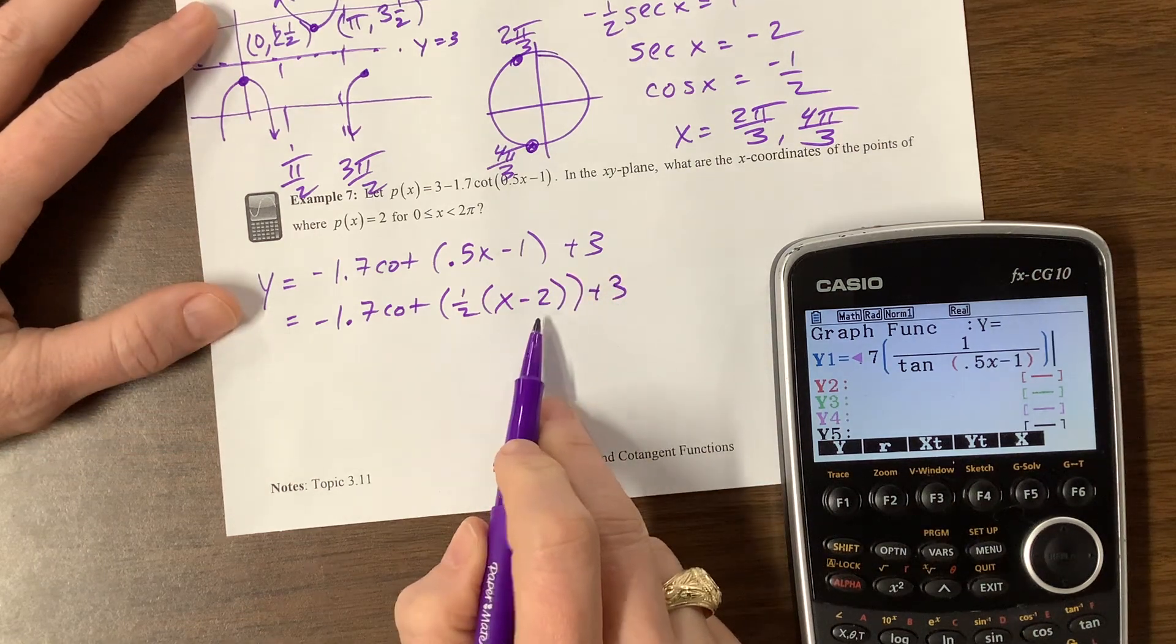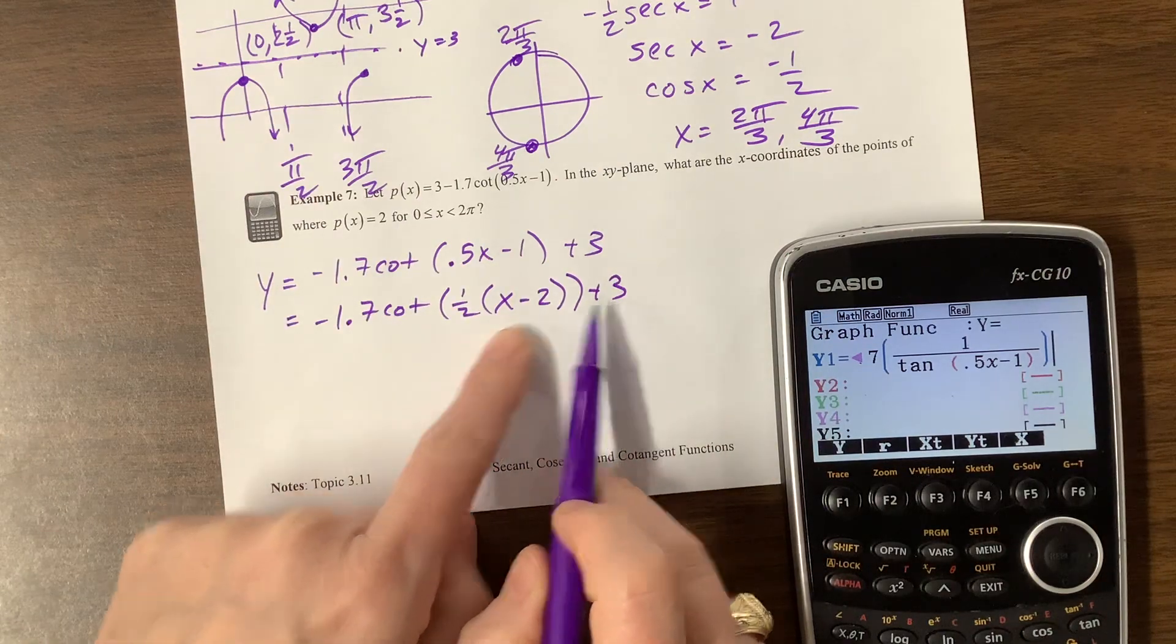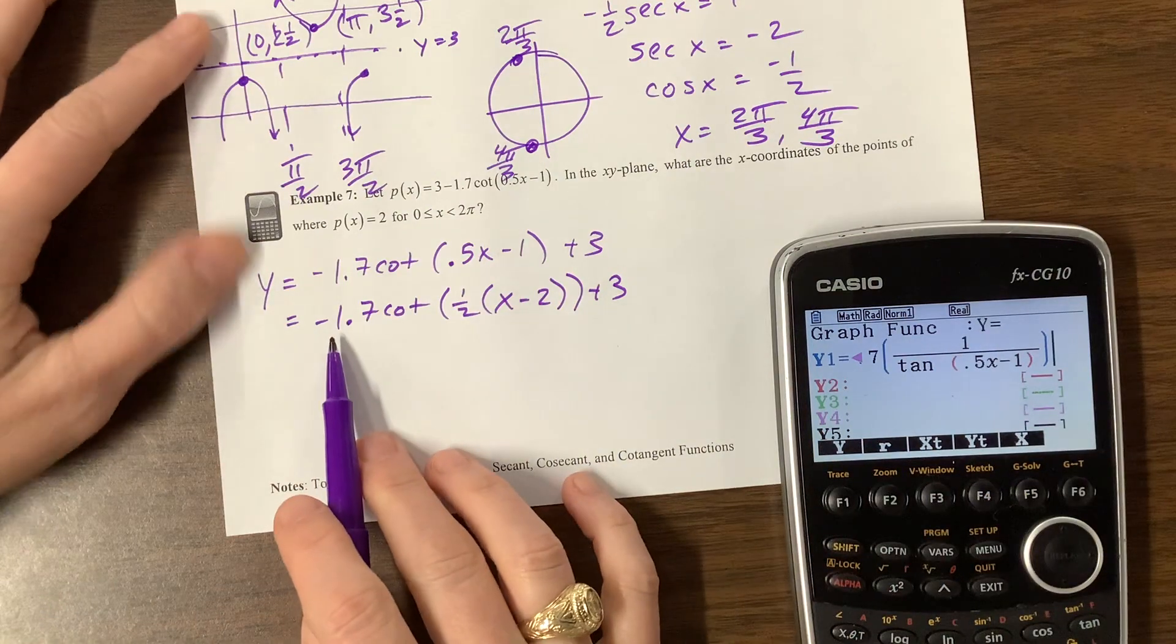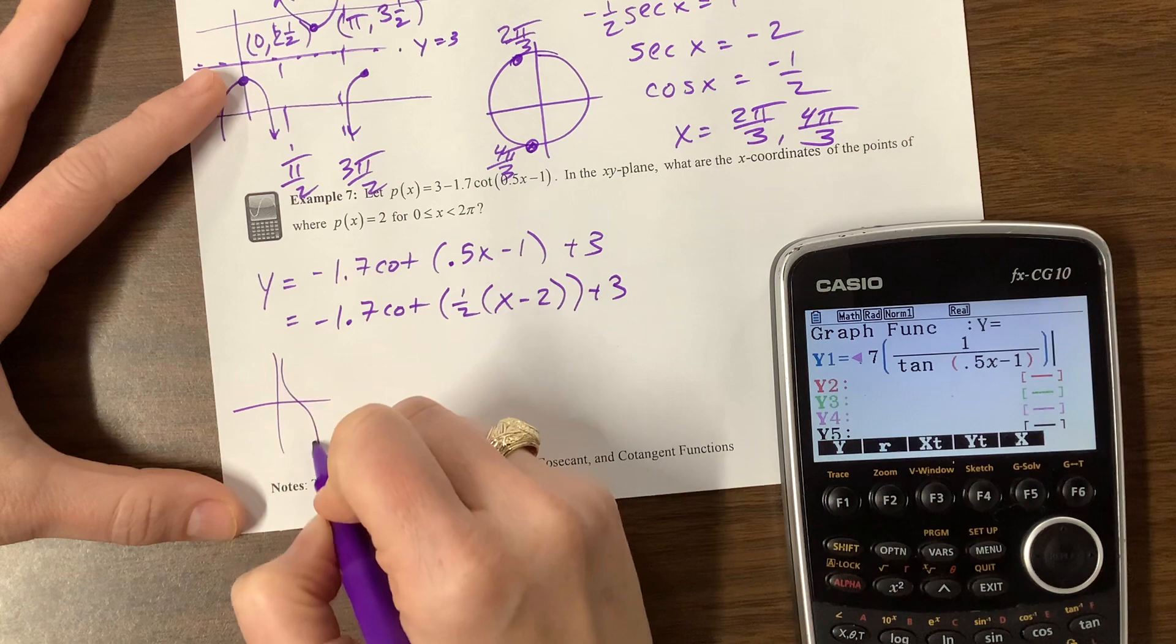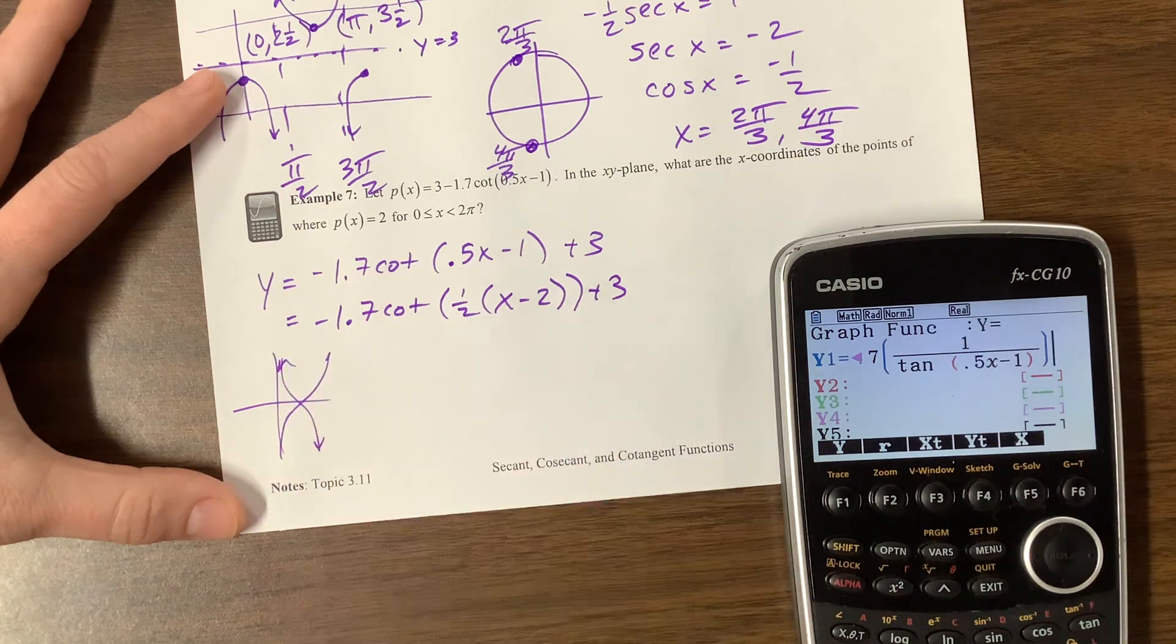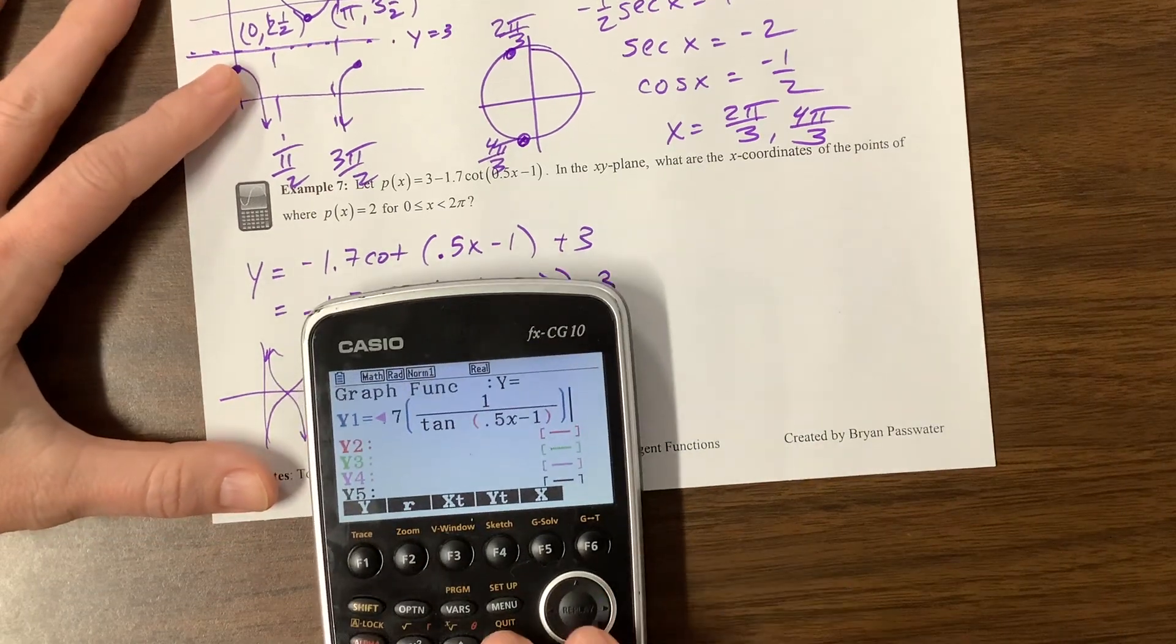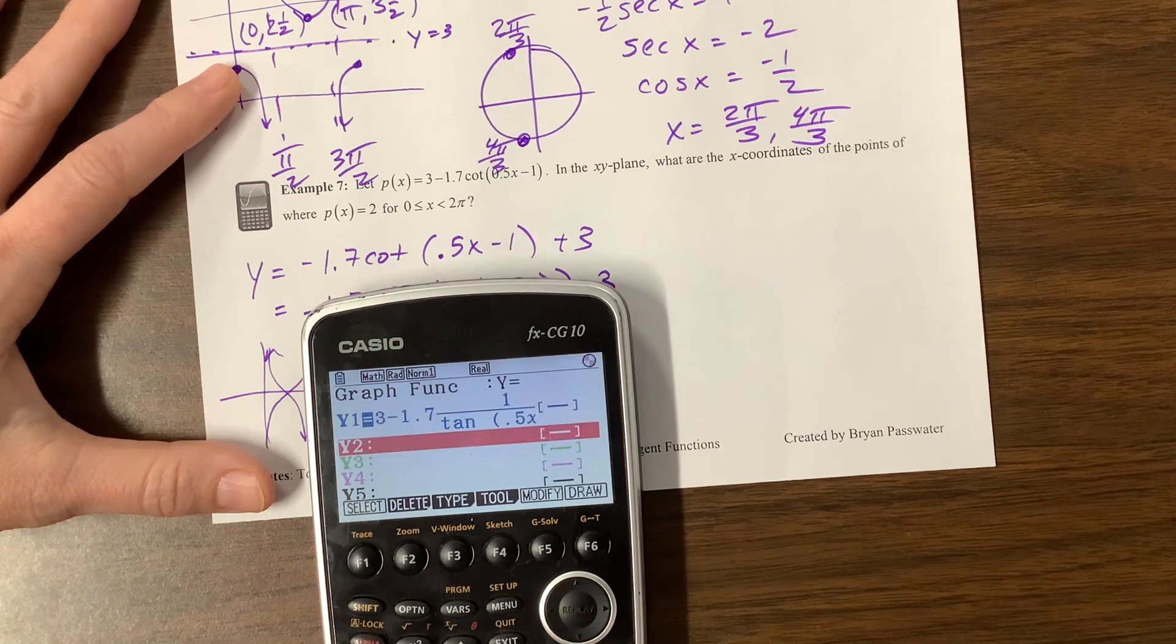I expect at the point, everything's going to shift over 2 and then up 3, and everything has been stretched this way. And then instead of cotangent, cotangent typically decreases all the time, but because of this negative, it's now going to increase all the time, so it's going to look a little more like tangent. This is kind of an interesting problem. Let's see if I get what I expected.